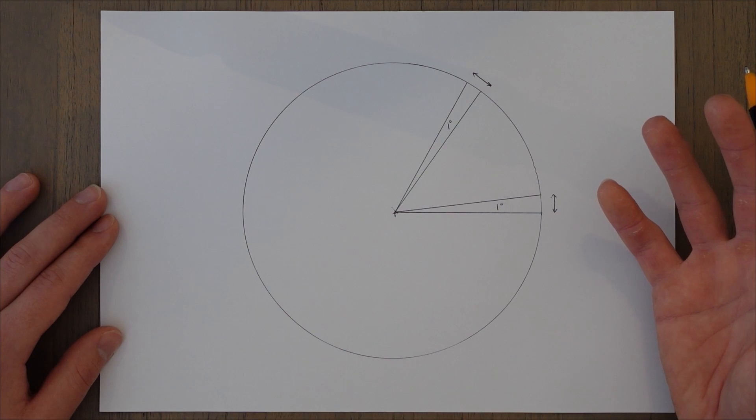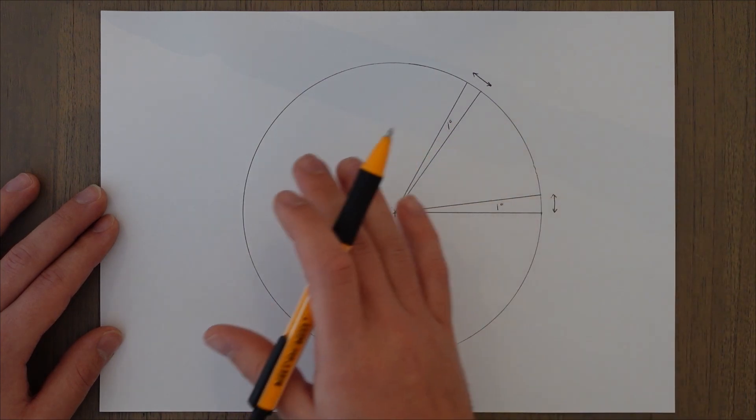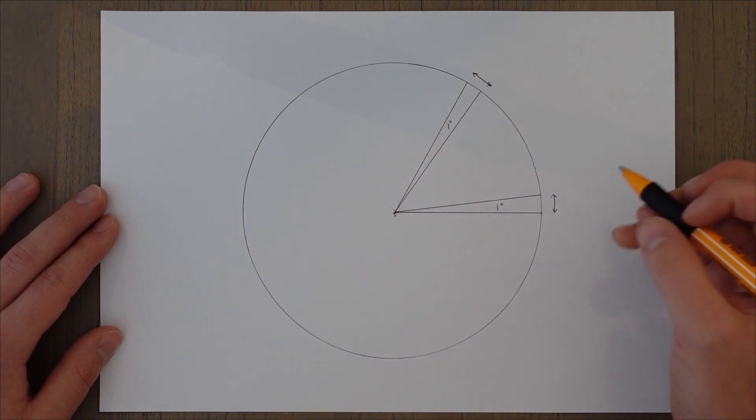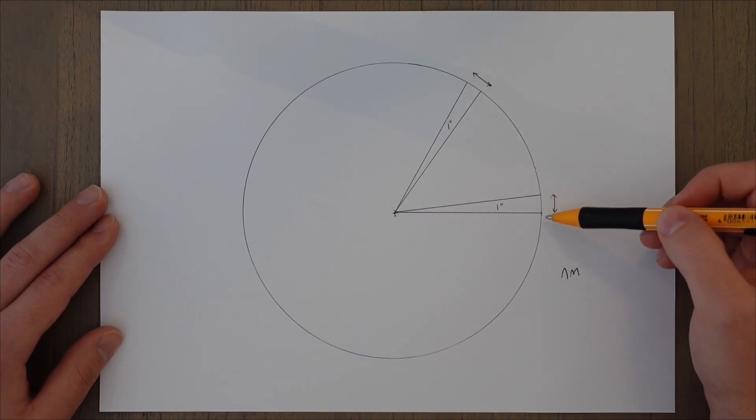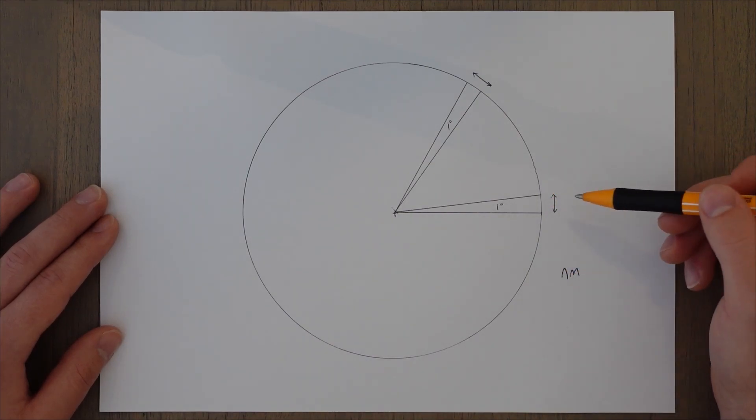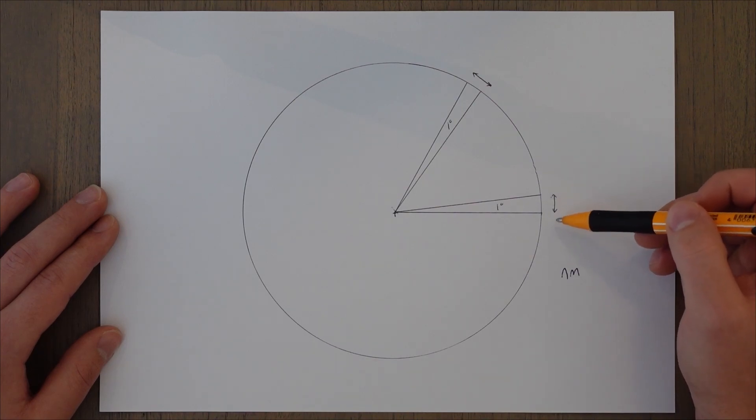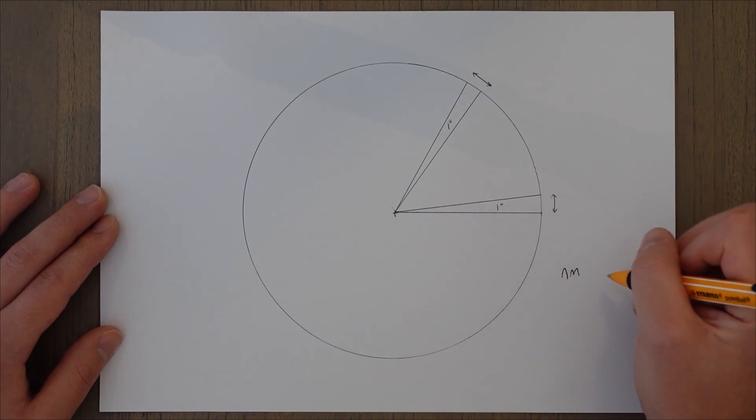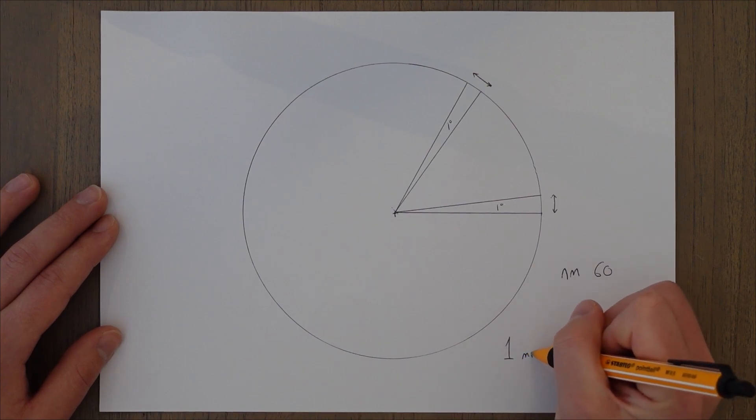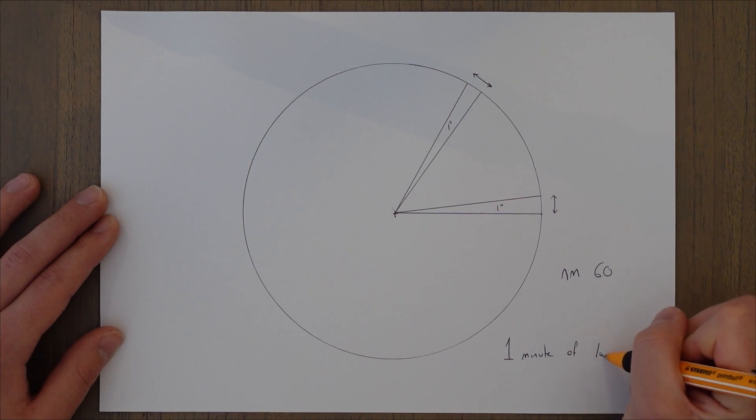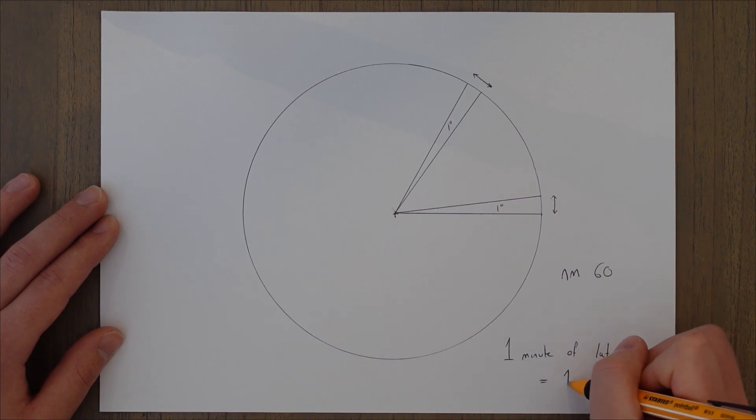The distance that we use in aviation for horizontal or long distance is the nautical mile. And this is derived from this change in latitude. So one degree change in latitude is equal to 60 nautical miles. Or you could say that one minute of latitude equals one nautical mile.